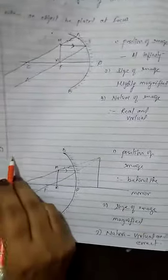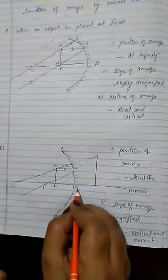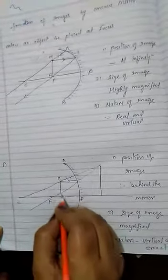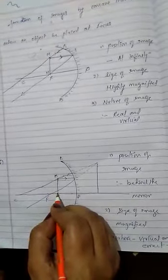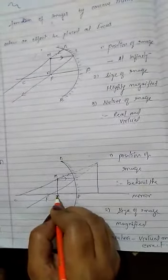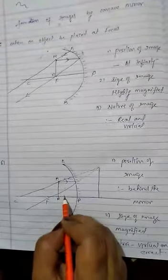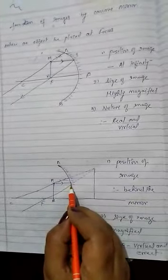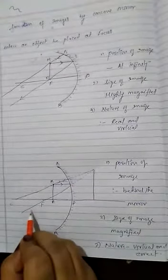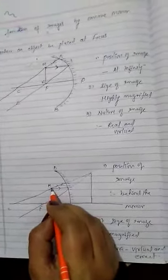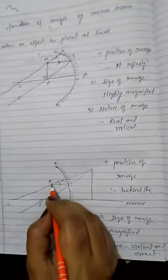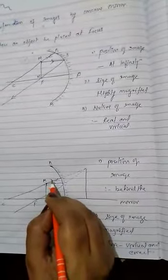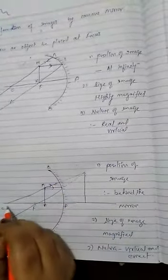The last point for concave mirror: when the object is placed between focus and pole. According to the statement, MB is the upright object, and for the image we need two reflected rays. The first ray is parallel to the principal axis and after reflection passes through the focus. The second ray starts from the top of the object and normally strikes the mirror, then after reflection passes through the center of curvature.